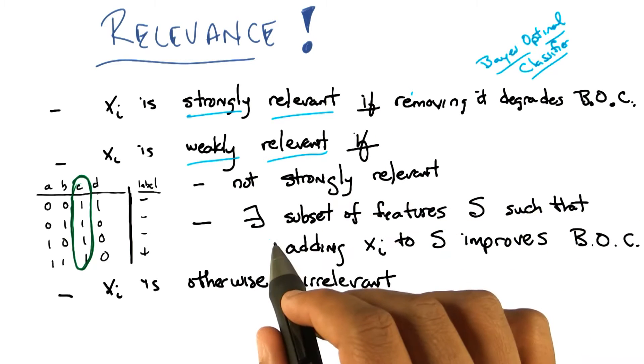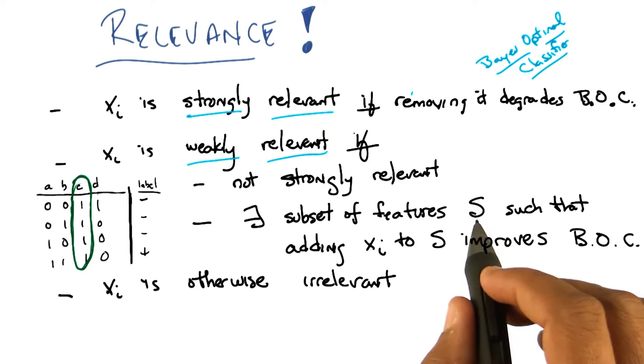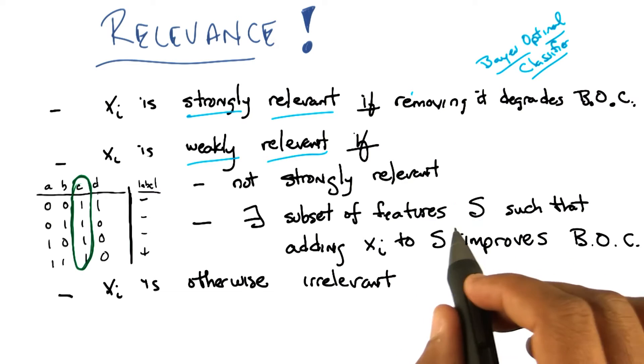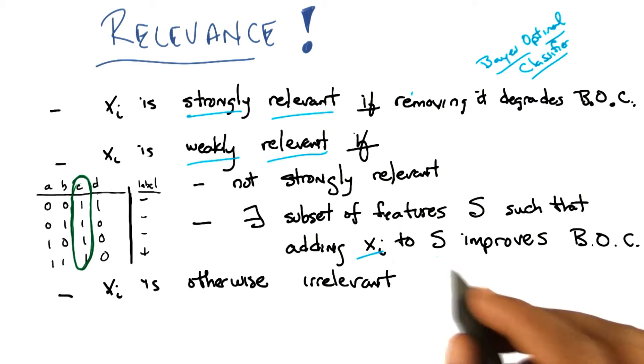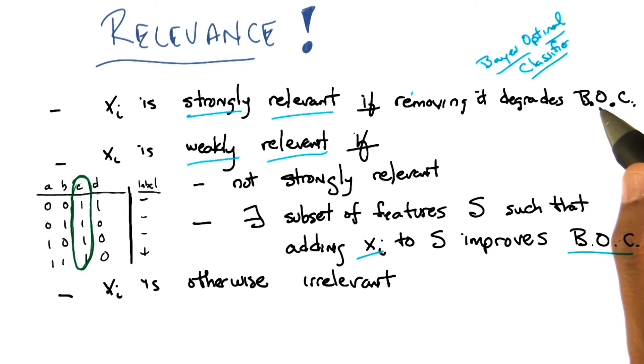And it turns out that there exists some subset of your features that's called that subset S, such that if I added the feature to that subset S, it would in fact improve the Bayes optimal classifier. So in this case, we're talking about the Bayes optimal classifier on, I guess in both cases, we're talking about the Bayes optimal classifier on the reduced set of features. Comparing it to the Bayes optimal classifier on the full set of features in the first case.